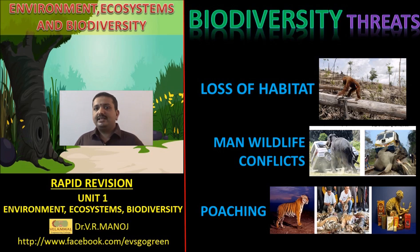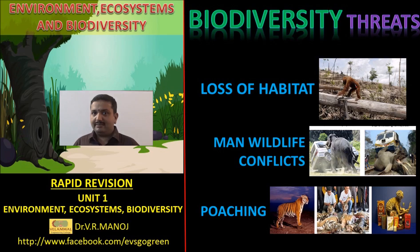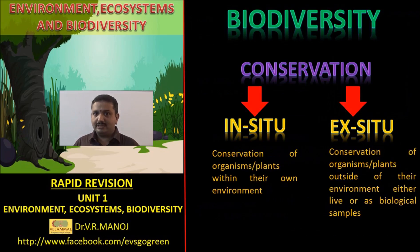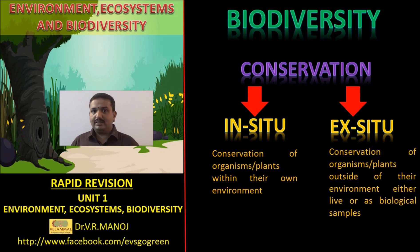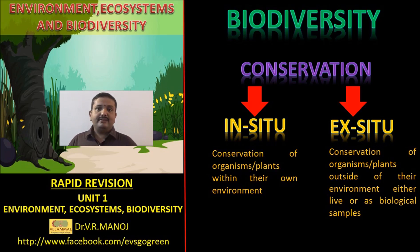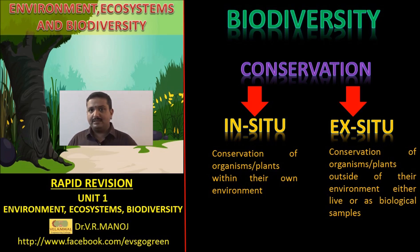Following the definition, types, values, and threats of biodiversity, we have the conservation methods of biodiversity, which are two. The first method, where you conserve the organism or plant within its own environment, is called in-situ biodiversity conservation.